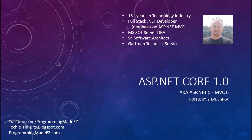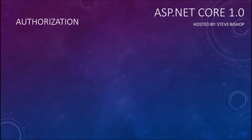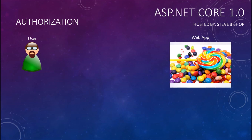Hello everyone and welcome back to ASP.NET Core 1.0. My name is Steve Bishop and in this video we're going to be talking about authorization. We may be at a particular point in our application where we don't just want any old user to be able to go to the various sections of our application. We need to identify who that user is, and based on whether or not they've logged in successfully, grant them access to those areas.